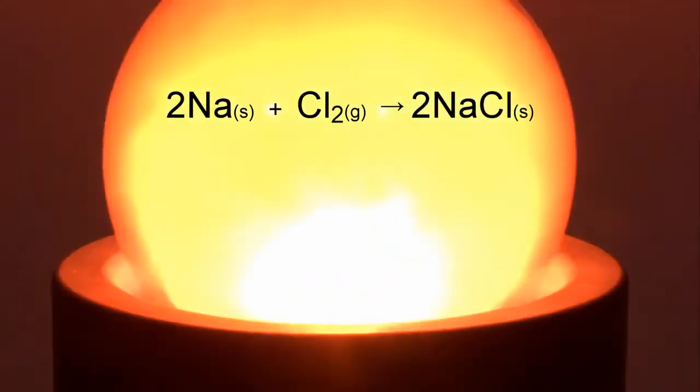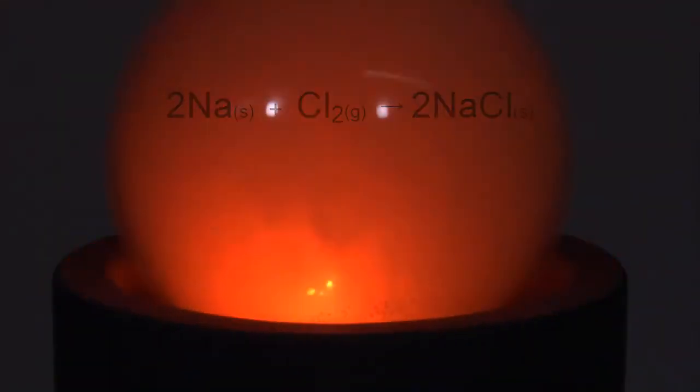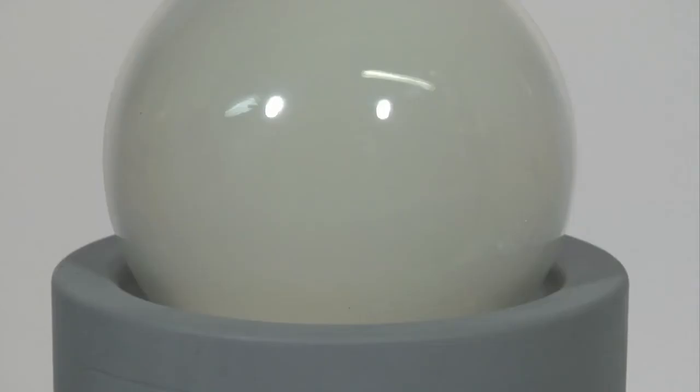The product is sodium chloride, which appears white only when excess chlorine has been removed from the flask.